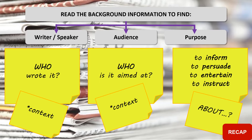Let's recap on what we have learned — a very quick recap this time. What you need to do when analyzing an article or speech is first to read the background information to discover the writer or speaker, the audience that the piece is intended to persuade or is aimed at, and the purpose of the piece: to inform, to persuade, to entertain or to instruct, and about what.